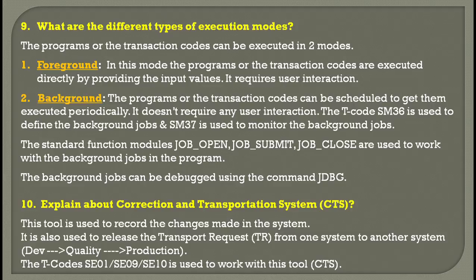The tenth question: explain about the Correction and Transportation System (CTS). This is a tool used to record changes made in the system and to release transport requests (TR) from one system to another — for example, from development to quality, and quality to production. The T-codes associated with CTS are SE01, SE09, and SE10. Key T-codes to remember from this session: SE91, SE01, SE09, SE10, SM36, and SM37.